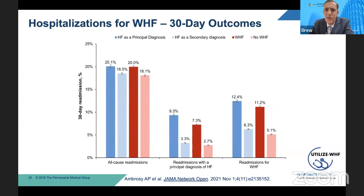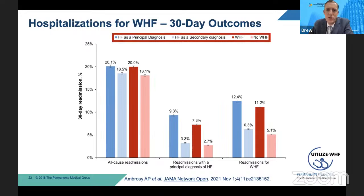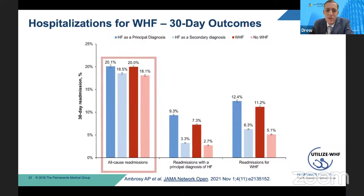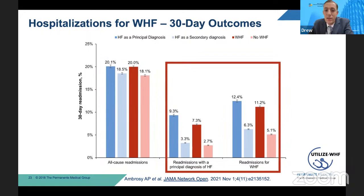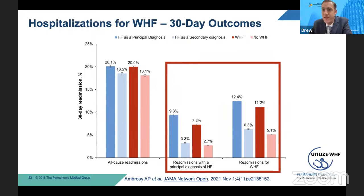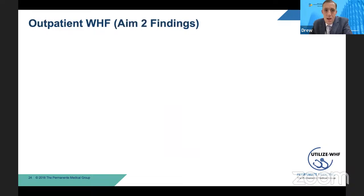We also looked at 30-day outcomes when we stratified these patients: solid blue is heart failure as a primary discharge diagnosis, light blue is heart failure as a secondary discharge diagnosis, and dark red and light red are worsening heart failure versus not using our NLP-based approach. These patients are high utilizers across the board no matter how you slice the population. But when we looked at readmissions for heart failure — either based on primary discharge diagnosis or based on NLP — event rates were quite similar between patients with heart failure listed as a primary discharge diagnosis and those classified as worsening heart failure using our NLP-based approach. There's strong circumstantial evidence that this NLP-based approach accurately classifies these hospitalizations for worsening heart failure.